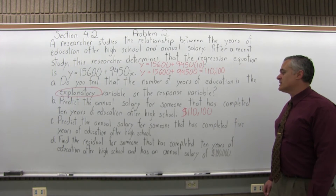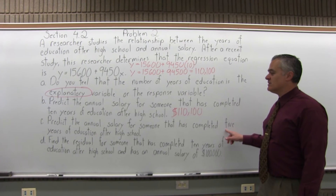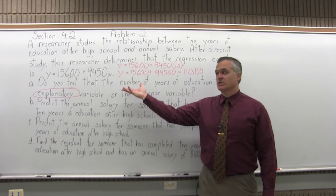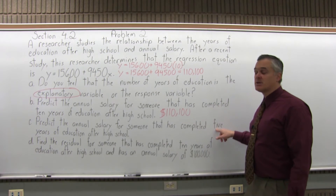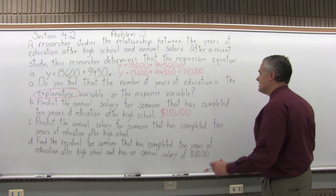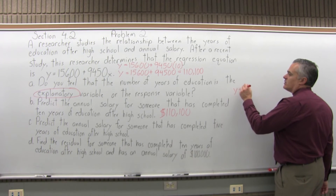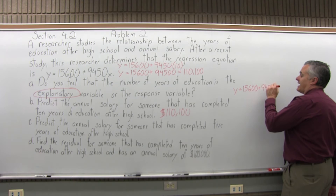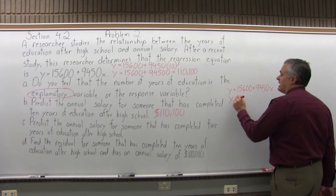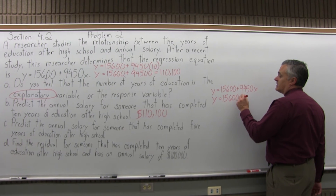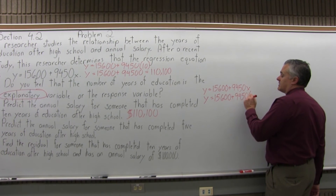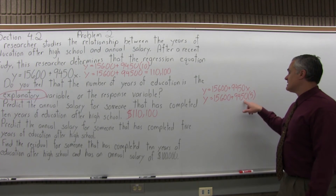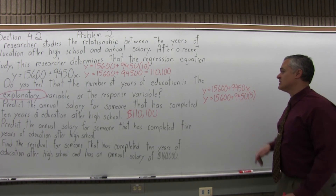Part C: predict the annual salary for someone that has completed five years of education after high school. It's the same process — take the regression equation given in the question and put in a 5 for x, because the question asks you to predict for five years of education. The order of operations makes it necessary to do the multiplication first and then the addition afterwards.